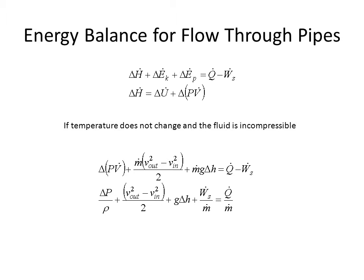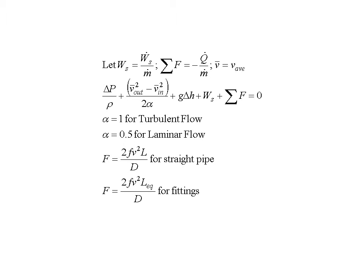Rearranging this equation, we end up with delta P by rho will equal the difference in the velocity squared between out and in over two. We also have the gravitational constant times the change in elevation, if there is any, delta P plus the shaft work over the mass flow rate, and that will equal the heat added or removed divided by the mass flow rate. We'll now redefine W sub S as the specific shaft work, which is W S dot divided by the mass flow rate, and we'll redefine the Q over M dot term as the sum of the frictional forces, and we'll use V bar as the average velocity over cross section of pipe.